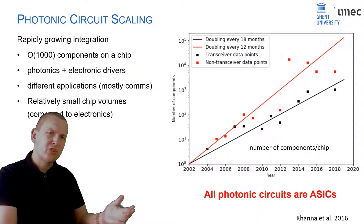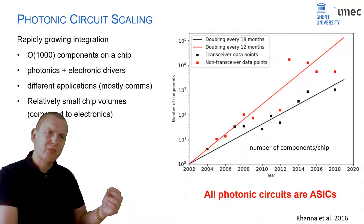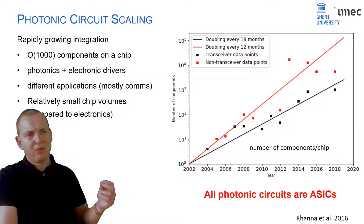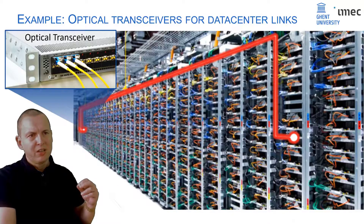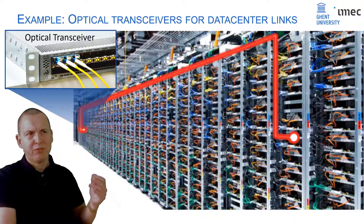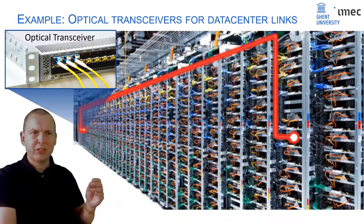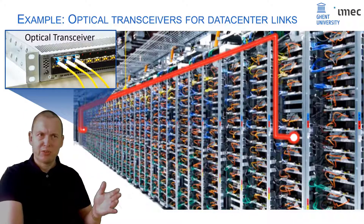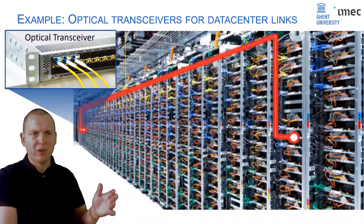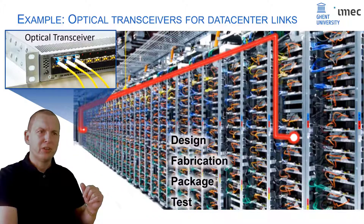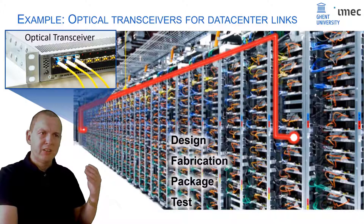One thing to keep in mind when looking at that graph is to consider what type of circuits these are. All of these photonic circuits are application-specific circuits — designed for one particular purpose. I can show best with an example: say you want to design an optical transmitter-receiver, a transceiver for a data center. This is a very typical application for photonic chips — you essentially want to send signals from one side of a data center to another. To design such a chip, you first choose your protocol, then design the chip layout, fabricate it, package it, and test it.